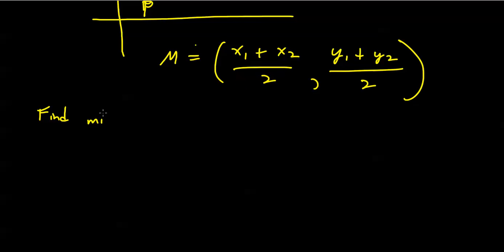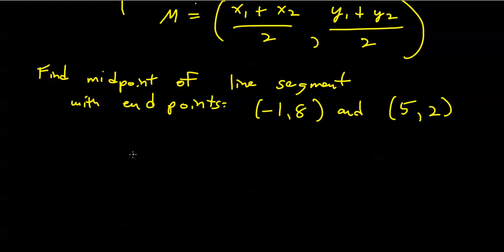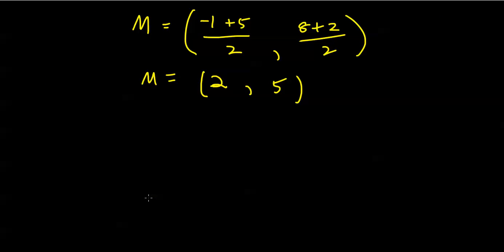Find the midpoint of the line segment with the following endpoints: (−1, 8) and (5, 2). To find the midpoint, I'll take the mean of the two given x-coordinates — add up the x-coordinates and divide by 2 — and similarly add up the two y-coordinates and divide by 2. That gives me: −1 plus 5 is 4, and 4 over 2 is positive 2; and 8 plus 2 is 10, and 10 over 2 is 5. So the midpoint is (2, 5).